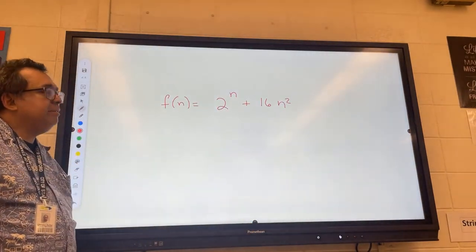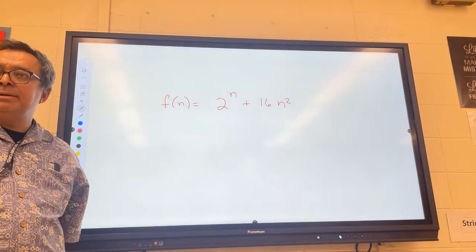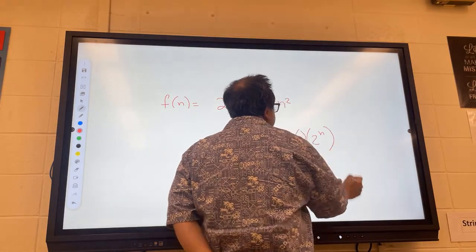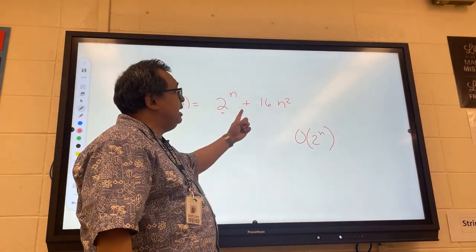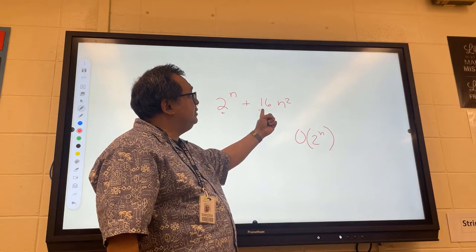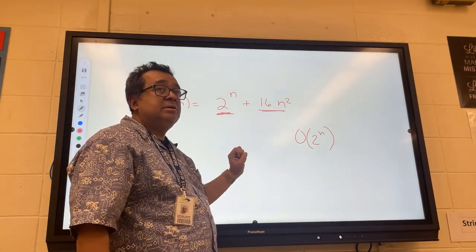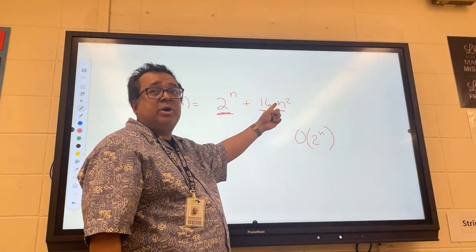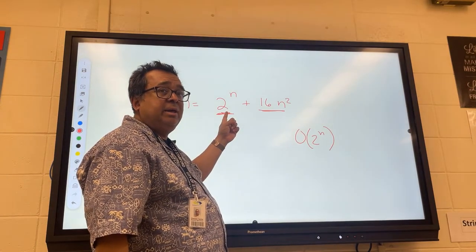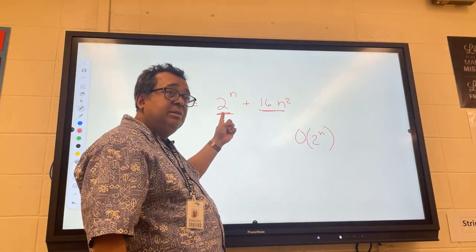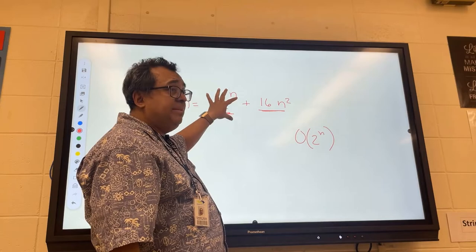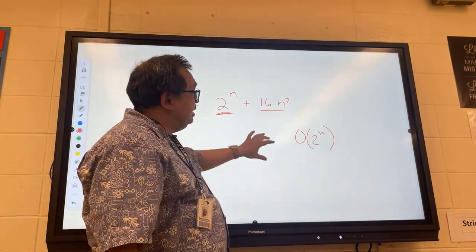What about Big O of another function containing both a polynomial and an exponential term? The exponential term dominates as n gets larger. The polynomial term is a square term, while the other is exponential — and the exponential grows faster than the polynomial. So the exponential is the dominant term, making f(n) Big O of 2ⁿ.